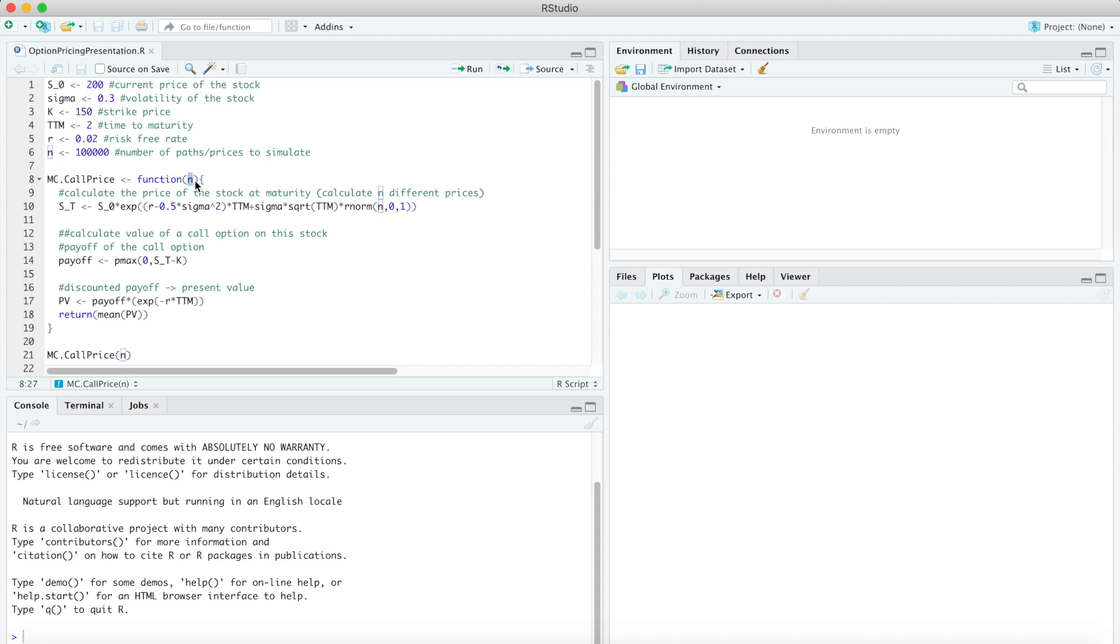Note that for each price we draw a random number from a standard normal distribution here. So in the end ST is a vector that contains n prices of the stock at maturity.